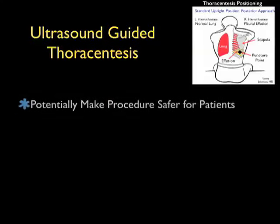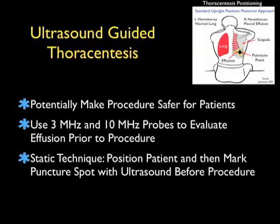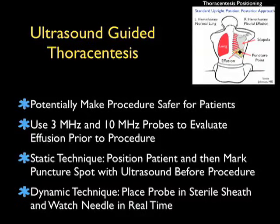In conclusion, thanks for tuning in for this SoundBytes module going over ultrasound guidance for the thoracentesis procedure. Sonography can potentially make the procedure a safer one for our patients with a decrease in the complication rate such as pneumothorax or perforation of the diaphragm. We'll want to use both the 3 megahertz and higher frequency 10 megahertz probes to fully evaluate the effusion in relation to the patient's anatomy prior to a puncture attempt. We can either use a static technique where we mark off the puncture spot with sonography prior to the procedure, or a dynamic technique where we place the probe in a sterile sheath and watch the needle in real time go into the chest cavity.